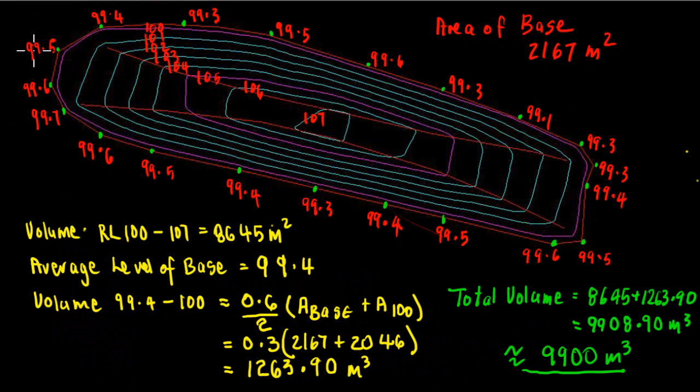So what we can do is work out the average height. I've added all these up - I think there's 20 of them - and divided by 20, and that gives us an average height or level of the base of 99.4, which means there's 0.6 of a meter between the base and the RL100 contour. So we can just do a small end area calculation between the base and the RL100 contour, which is the distance 0.6 divided by 2, and then it's the area of the base plus the area of RL100.